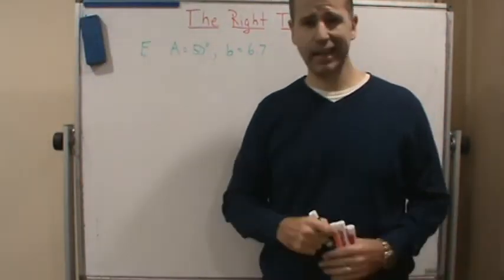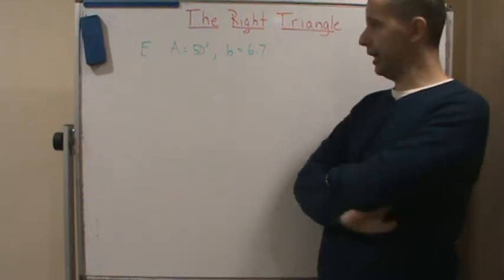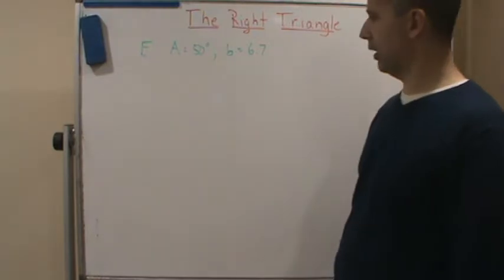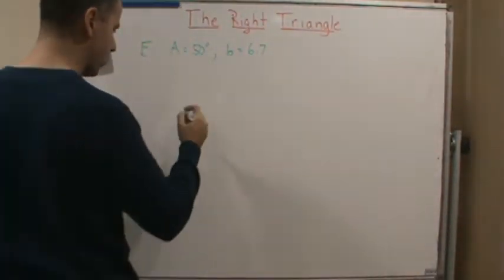Okay, so let's say we're given, in this example, a right triangle and we know that angle A is 50 degrees and side B is 6.7. So again, let's sketch our right triangle.